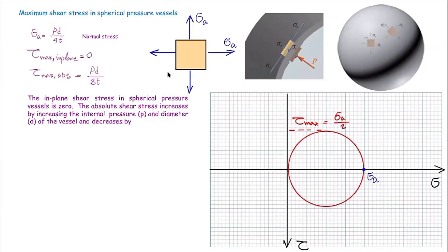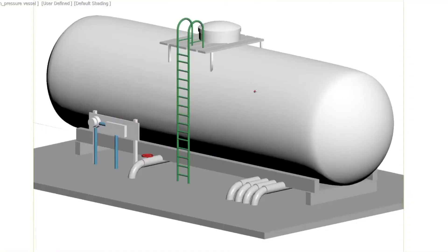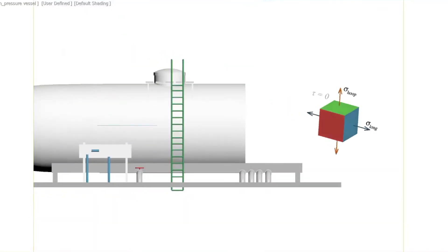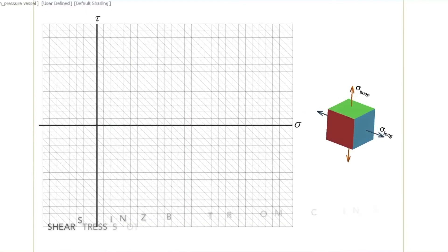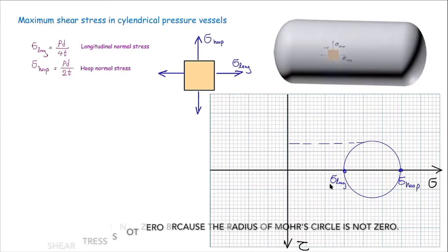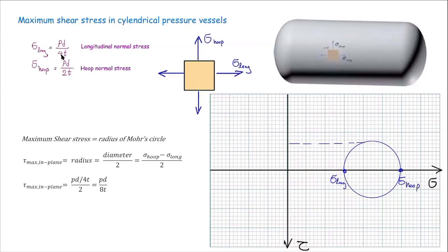Now we are going to do the same for cylindrical pressure vessels. On the cylindrical pressure vessels, stresses in the horizontal and vertical direction are different from each other. I am going to draw the stress element associated with this two-dimensional stress element. It is obvious that there will be in-plane shear stress. The magnitude of the in-plane shear stress would be the difference between the hoop stress and the longitudinal stress divided by two. So the difference between these two is Pd divided by 4t, divided by two, which gives us Pd divided by 8t. That is the maximum in-plane shear stress.